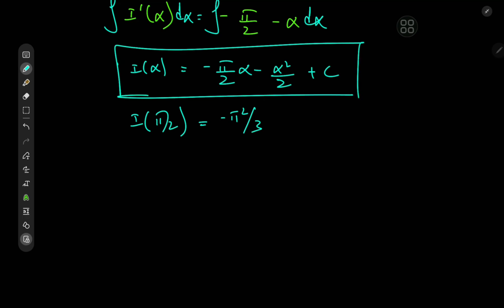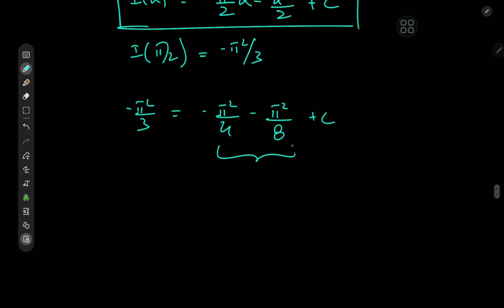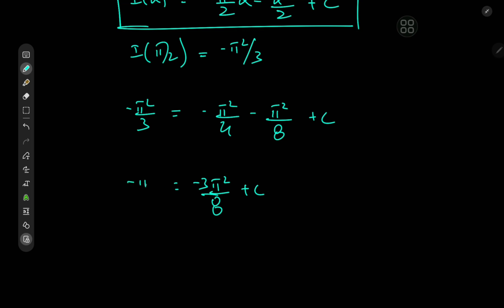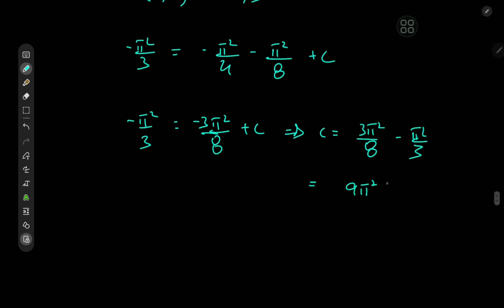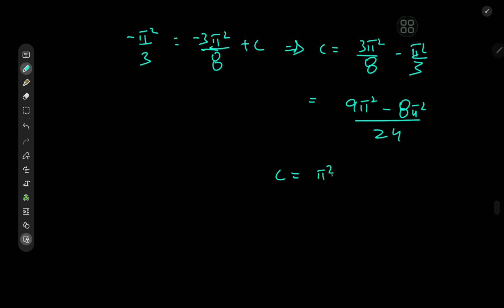Plugging α equal to π/2 into our formula: negative π²/3 equals negative π/2 times (π/2 minus π²/8) plus C, which gives negative π²/4 times (1 plus 1/2) plus C, that is negative 3π²/8 plus C. Solving for C gives C equals 3π²/8 minus π²/3. Computing: (9π² minus 8π²) / 24 equals π²/24. So C equals π²/24.